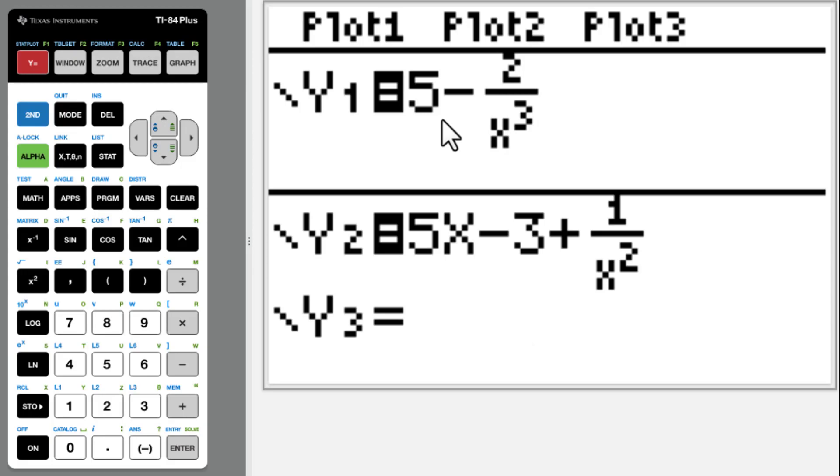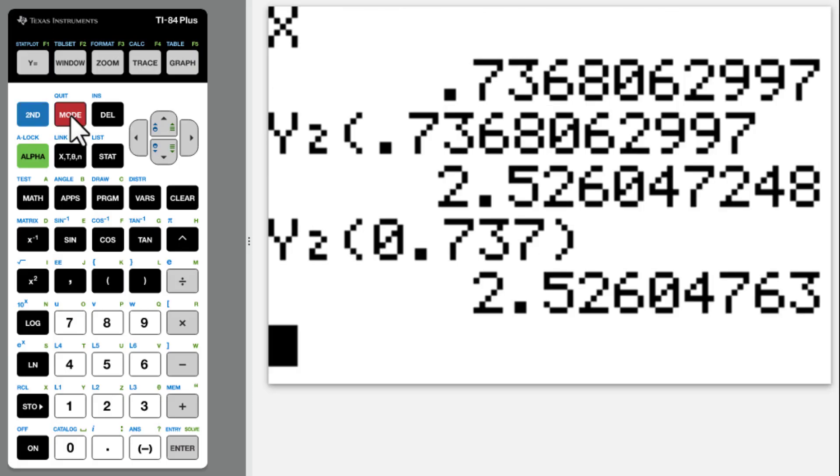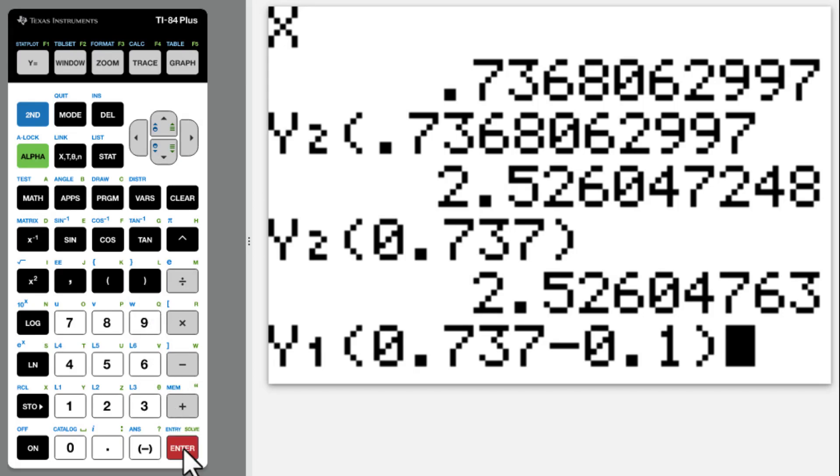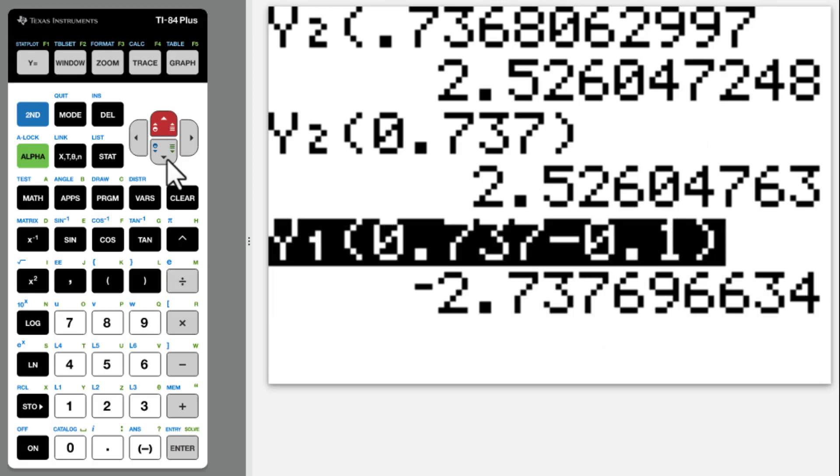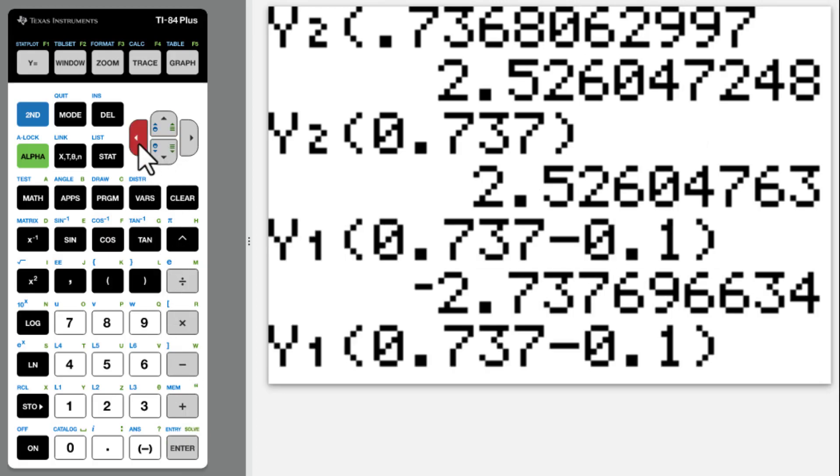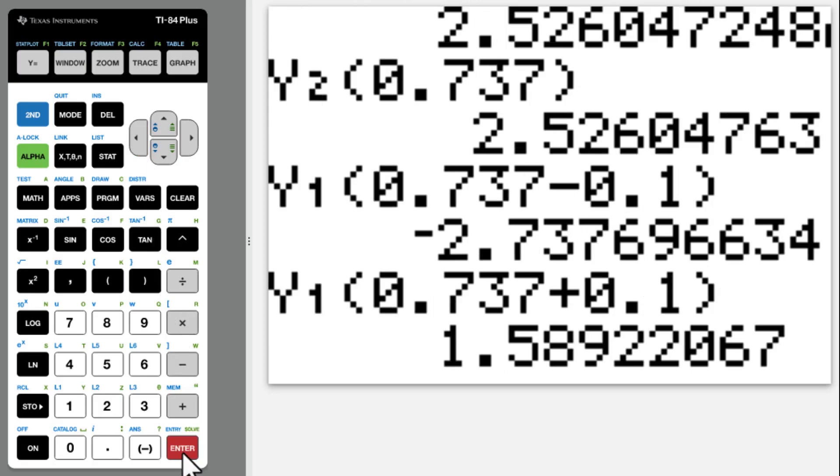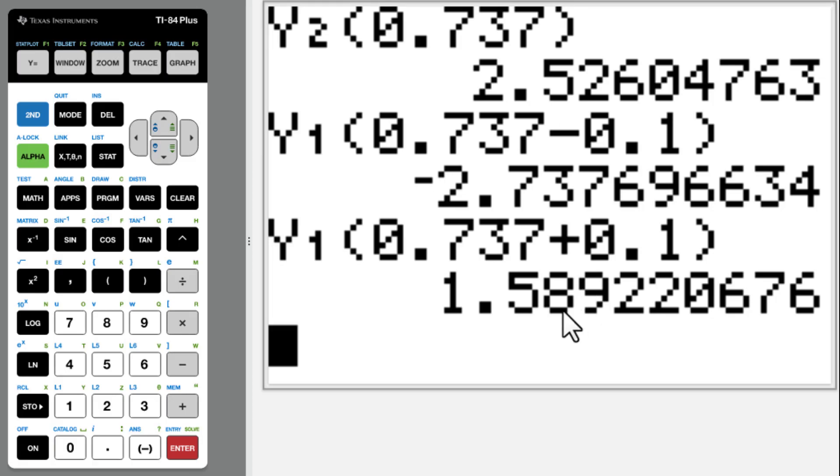So we go to alpha trace y1 parentheses 0.737 minus 0.1. Enter. It's a negative. Pull this down. Then change minus into plus. Enter. We get positive number.